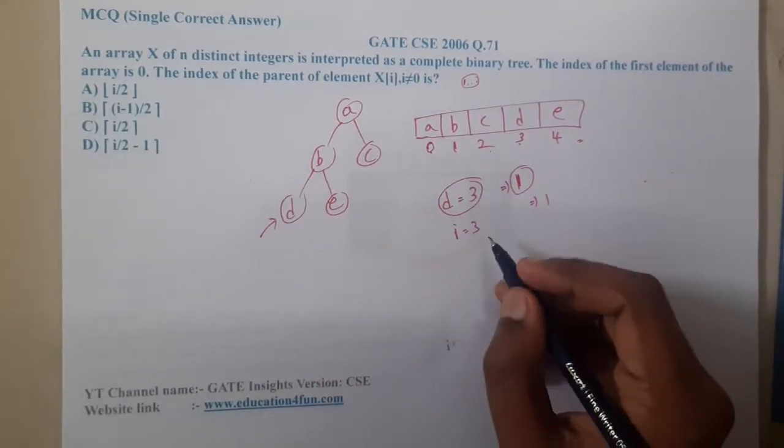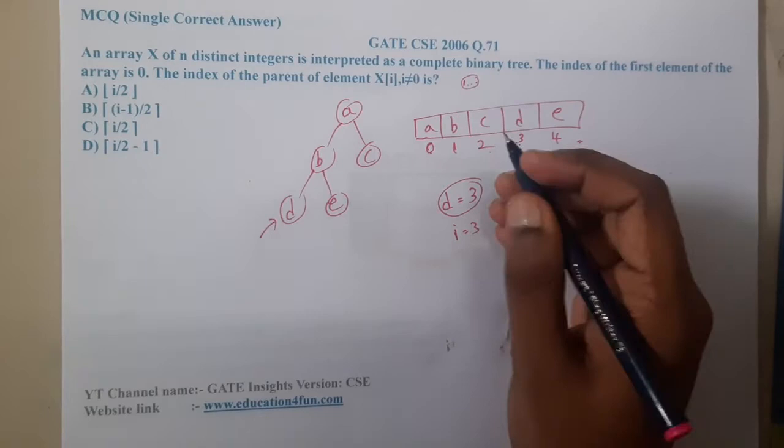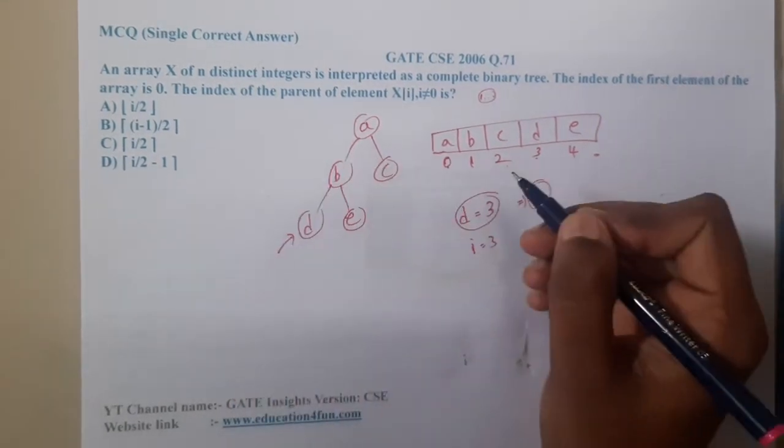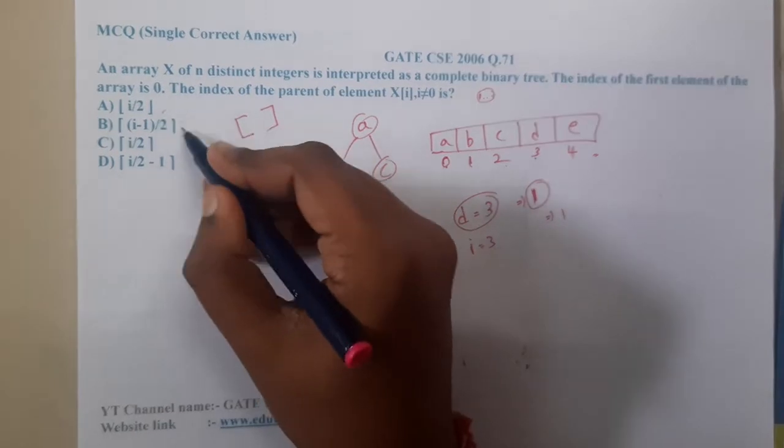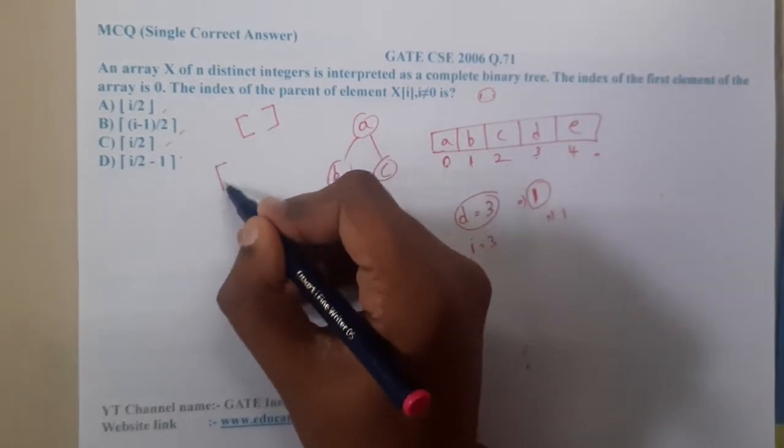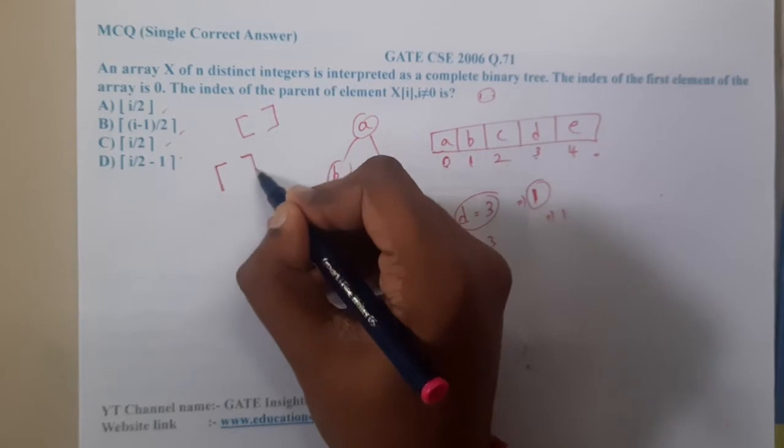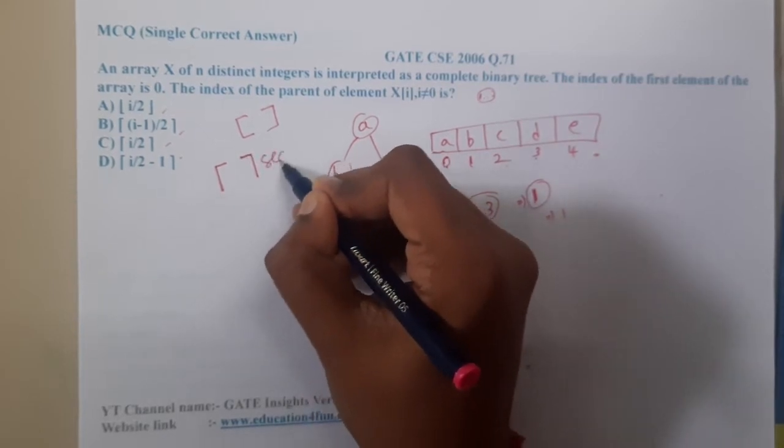First option is i by 2. Remember one more thing: these brackets are a bit different. They did not write in this way. These are different type of brackets. The first bracket is called as ceil.